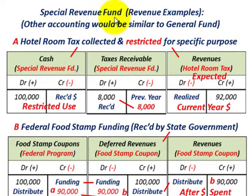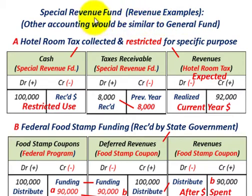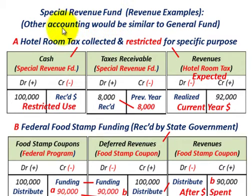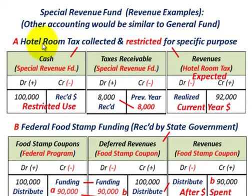Let's look at some revenue examples for our Special Revenues Fund to get a basic understanding of how revenues would be handled. The other accounting would be very similar to the General Fund. Let's look at the first case.